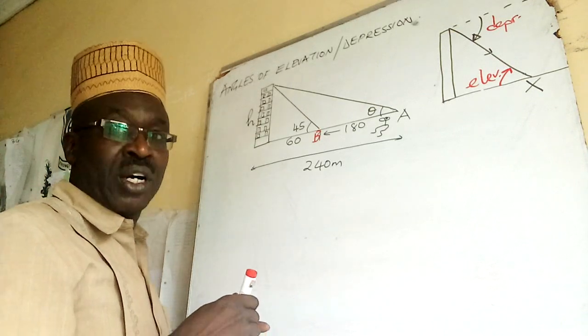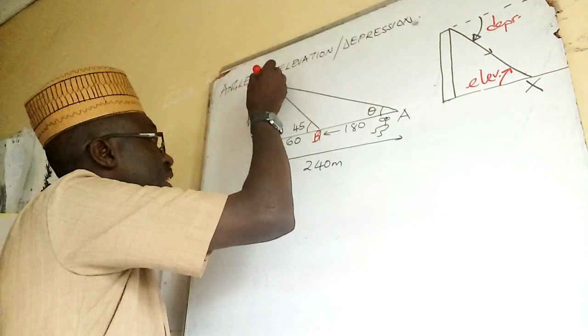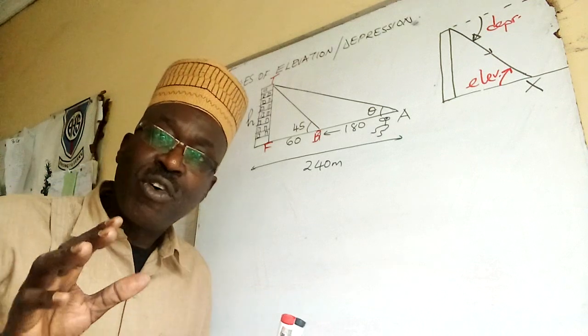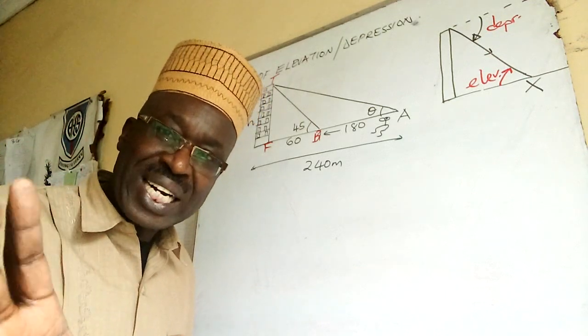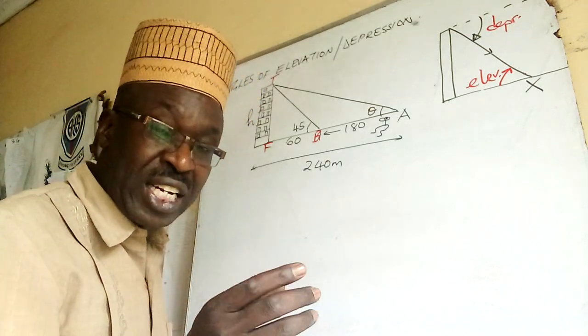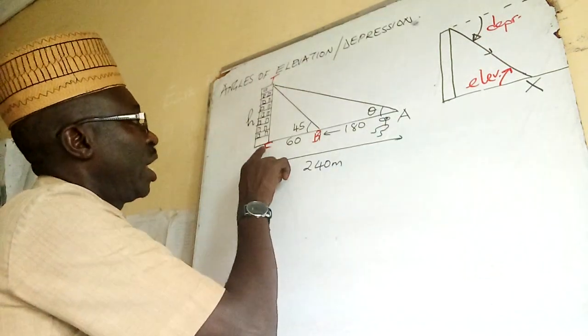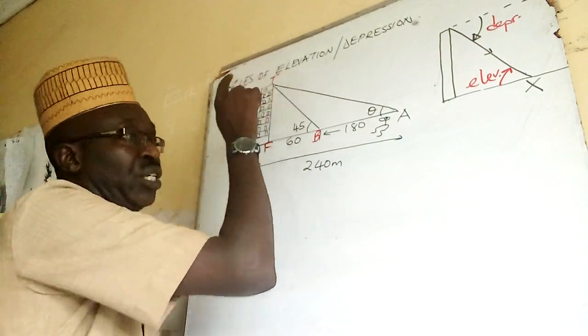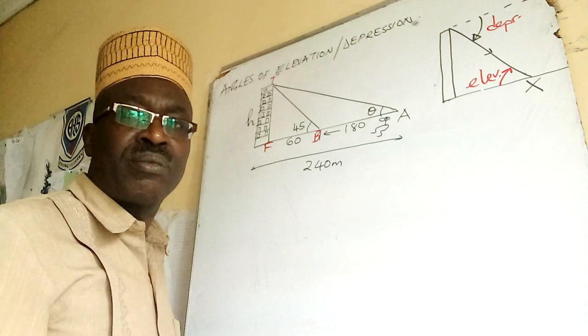Where now he sees the top of the building at angle of elevation 45 degrees there. Now let us have this foot of the building F under this top T. So information you will be given will always lead you to triangles like here, specifically two right angles triangles AFT and BFT. In most cases you will get that.